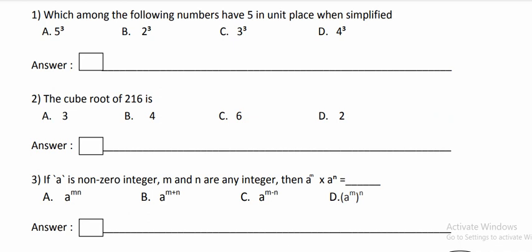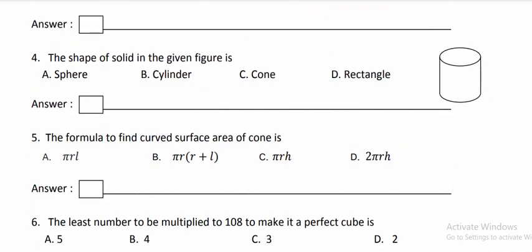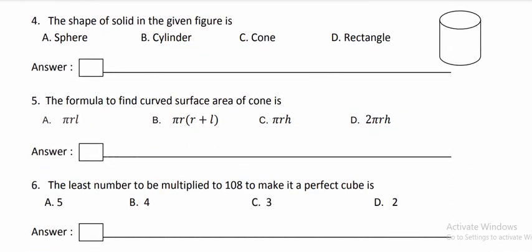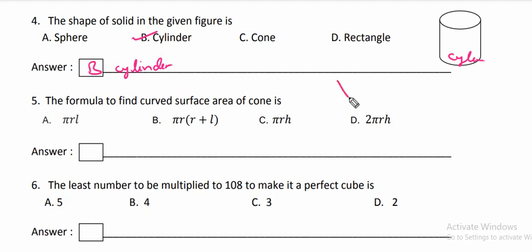The fourth question shows the shape of the solid in the given figure. This shape is the cylindrical shape. Therefore, option B, cylinder, is the correct answer. The formula to find the curved surface area of the cone — this is the cone shape. For finding the curved surface area, the formula is option A, that is pi R L.